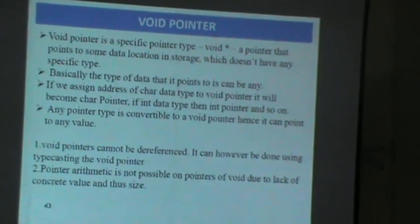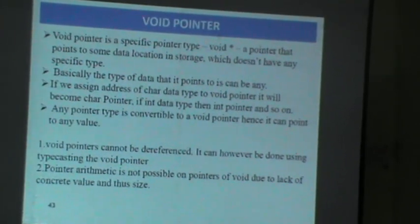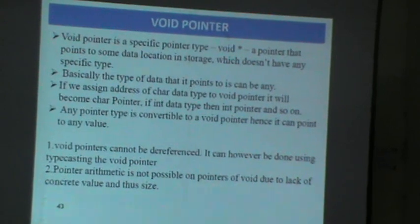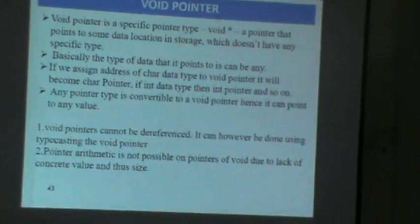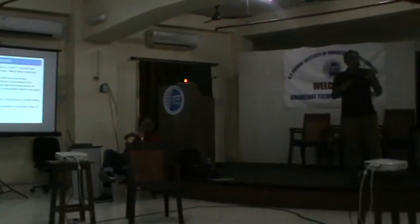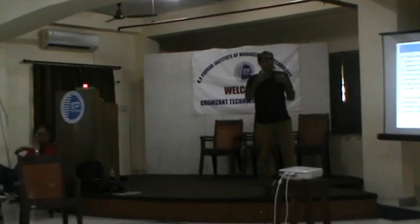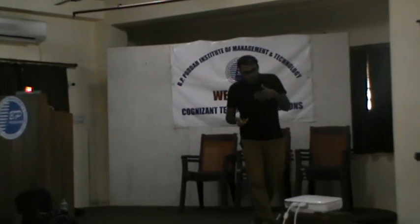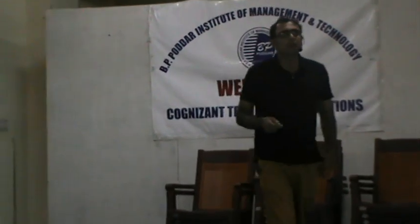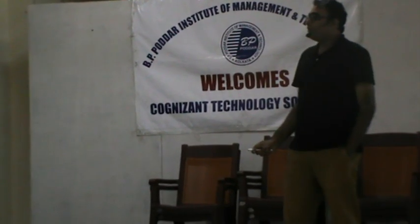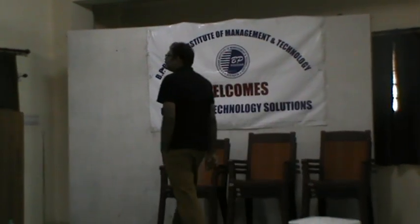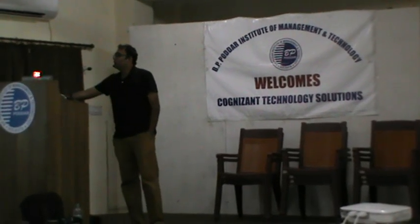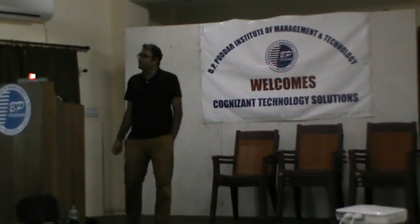The problem with dereferencing a void pointer is that you cannot directly dereference it. Dereferencing means using star P to reach the value. If you assign a void pointer and then assign it to an integer data type and want to dereference it without a type cast, it will become a problem. That is why a void pointer cannot be directly dereferenced — it must be type cast first. Pointer dereferencing is not possible on a void pointer due to the lack of a concrete type.